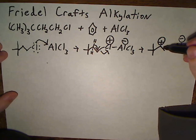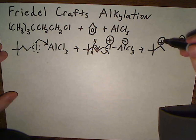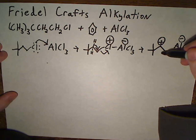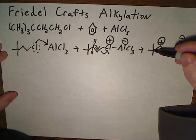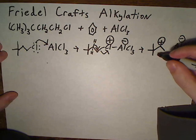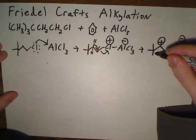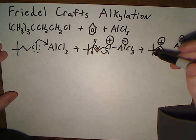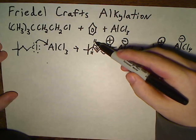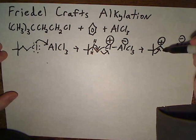And again we have another rearrangement that's possible here. Here we have a secondary carbocation next to a quaternary carbon and whenever you have that you have the possibility for what's called an alkyl shift, in which it's just like a hydride shift except instead of a hydrogen coming along you have a carbon that comes along.